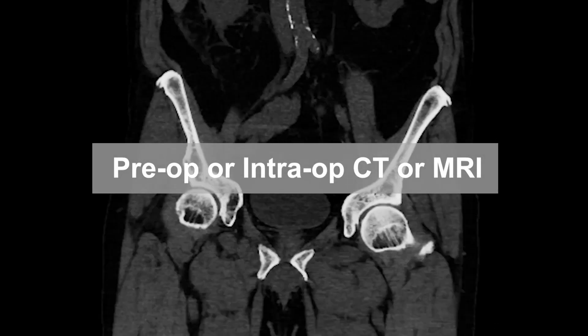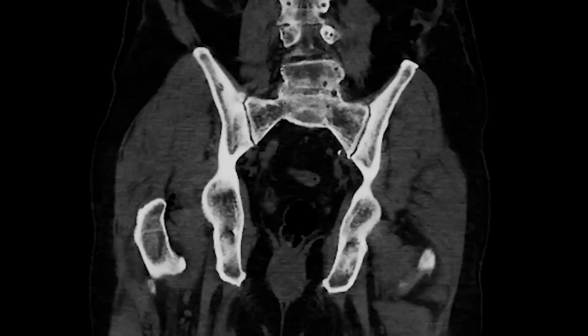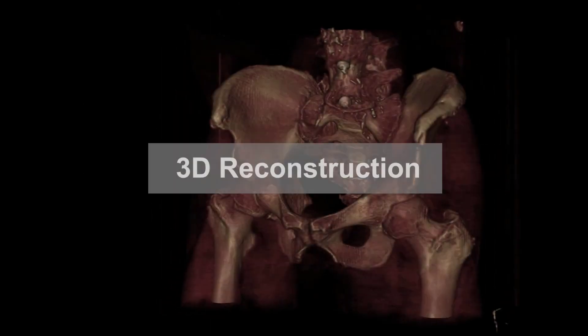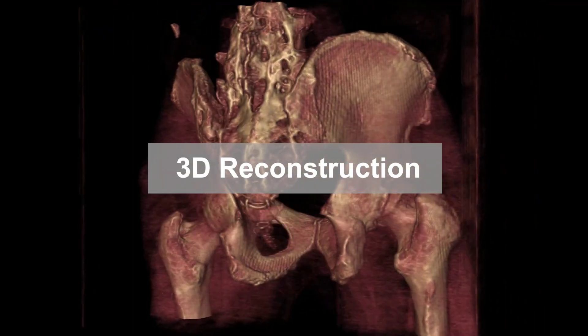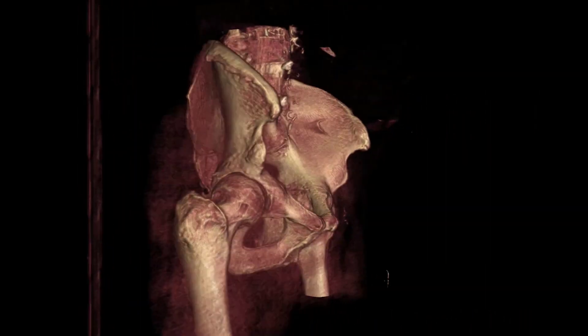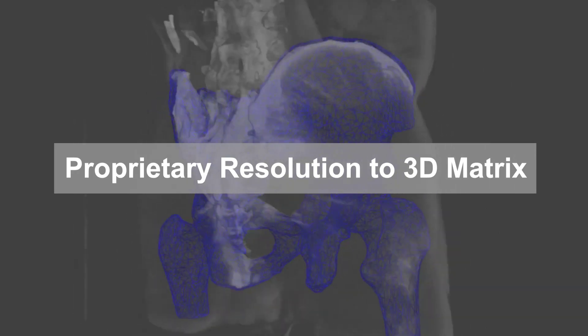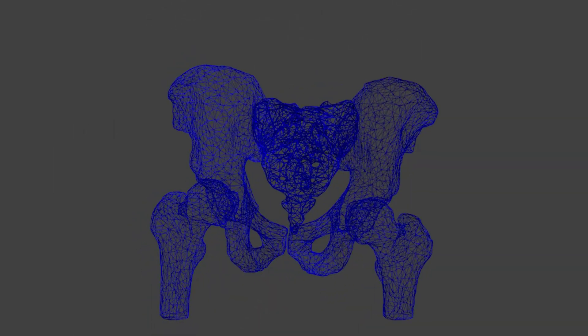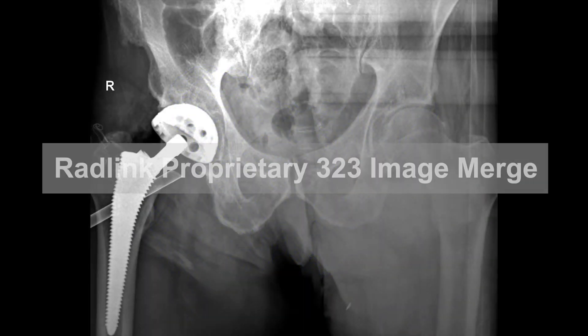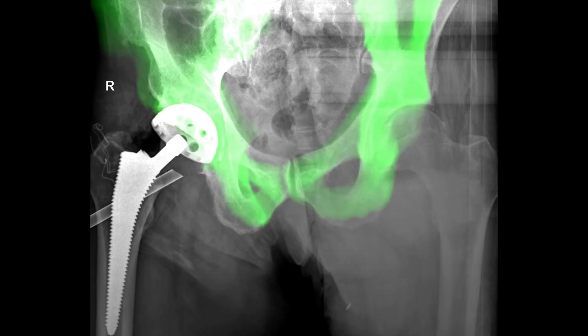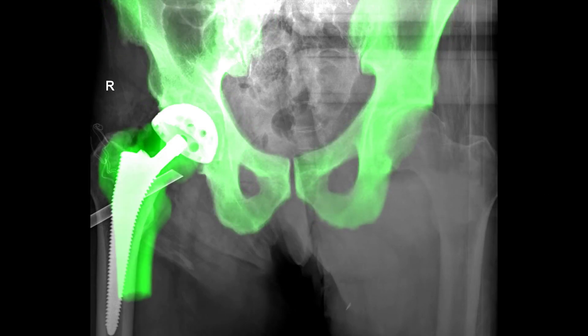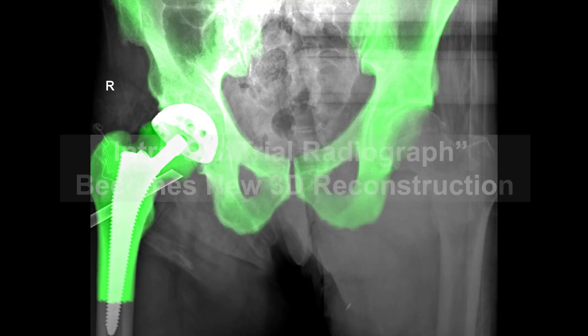Utilizing a preoperative CT or 3D c-arm intraoperative CT, Radling323 software creates a 3D model of the pelvis or operative hip. Beginning with preoperative x-ray analysis, the 3D model is meshed with the reference x-ray orientation. This solution provides quantitative feedback of change in pelvic tilt and femur position.